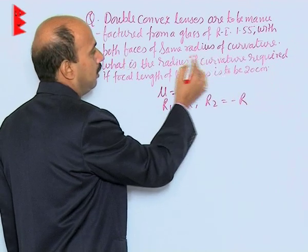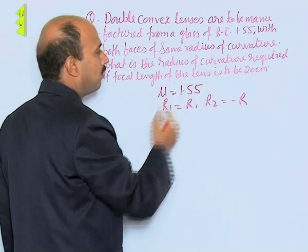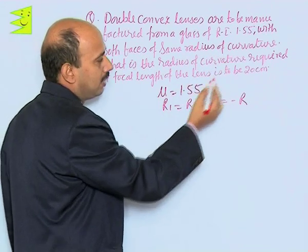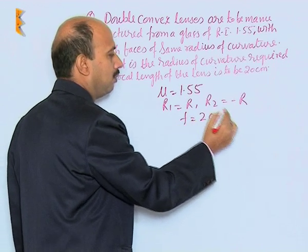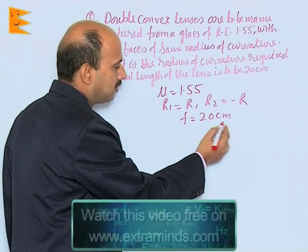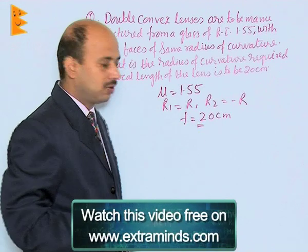Here you have to find out the radius of curvature required if the focal length is to be 20 centimeters. So f equals 20 centimeters. Because it is a convex lens, the focal length will be positive.